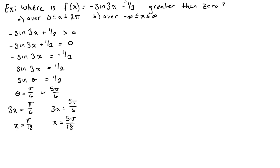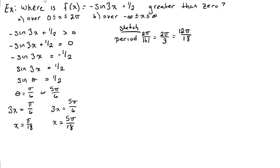So those are our two solutions. If we were solving an equality, we would consider our domain and be done with it. But because we have an inequality, it really does make sense to do a quick sketch. One thing that's important when we're sketching is the period. I'm going to rewrite 2π/3 with a denominator matching our solutions — 2π/3 is the same thing as 12π/18 — so that these are easier to find on our graph.